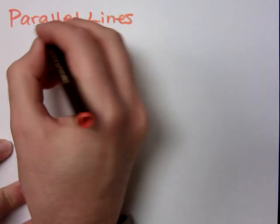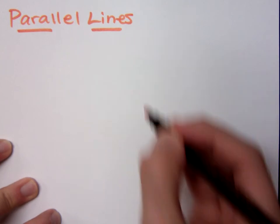What can you tell me about parallel lines? For parallel lines, number one, let's talk about the definition. They are coplanar lines that never intersect.